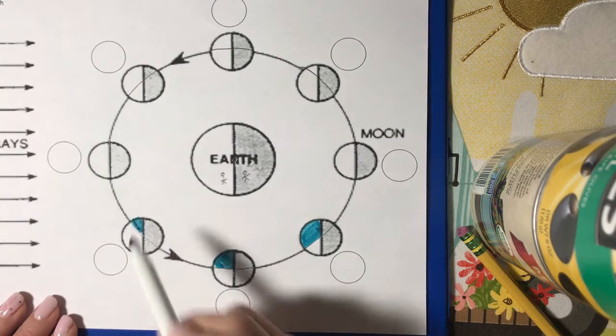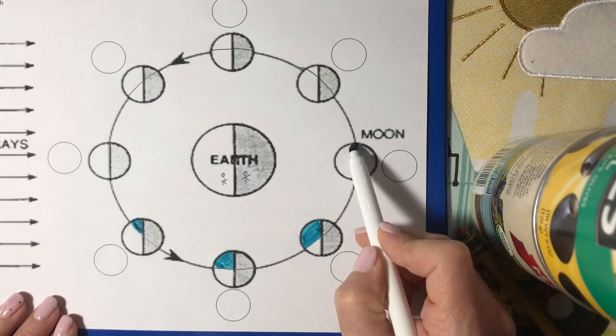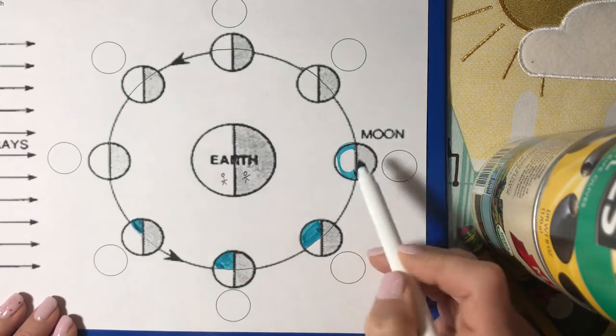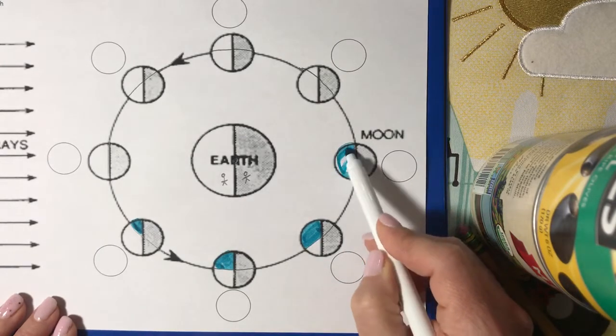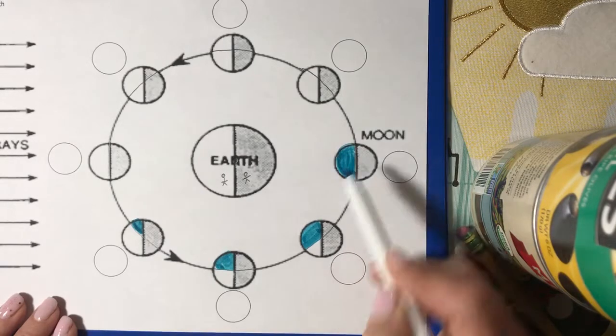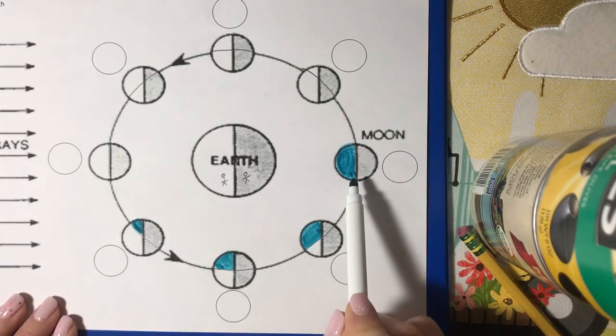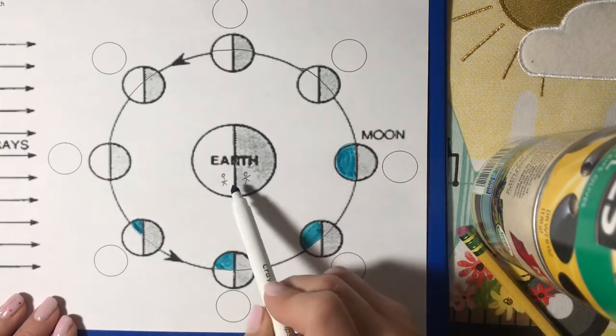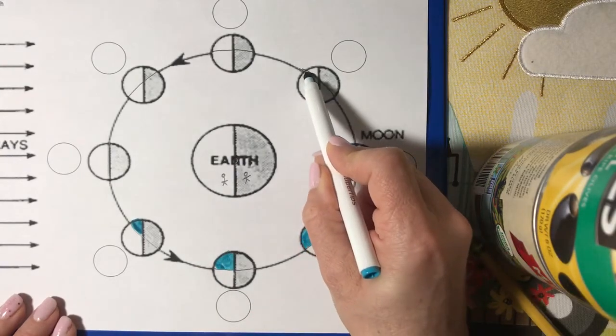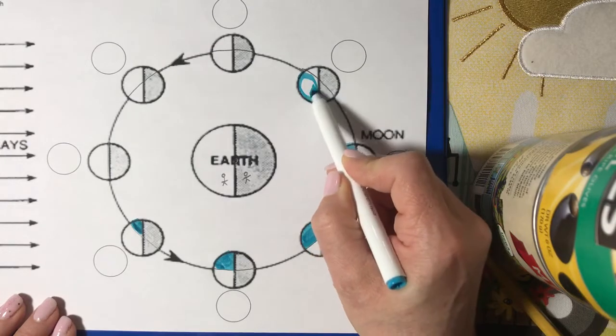At this point, that whole half is visible. Notice this is the point where the moon is opposite the sun. We call that opposition. At this point, most of the moon is visible.